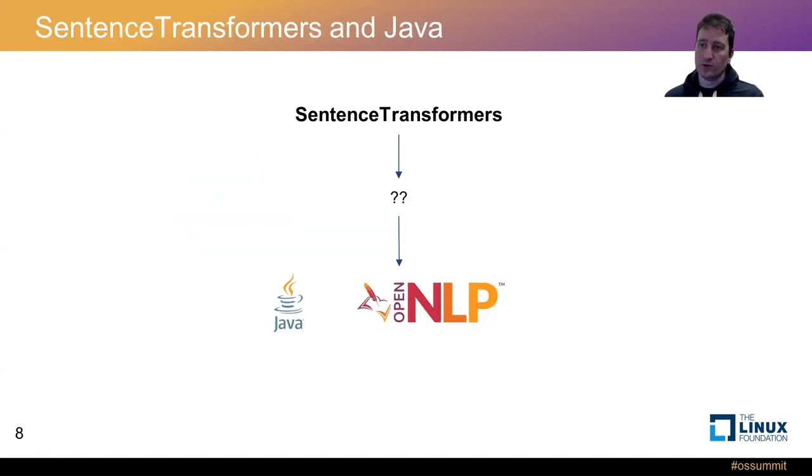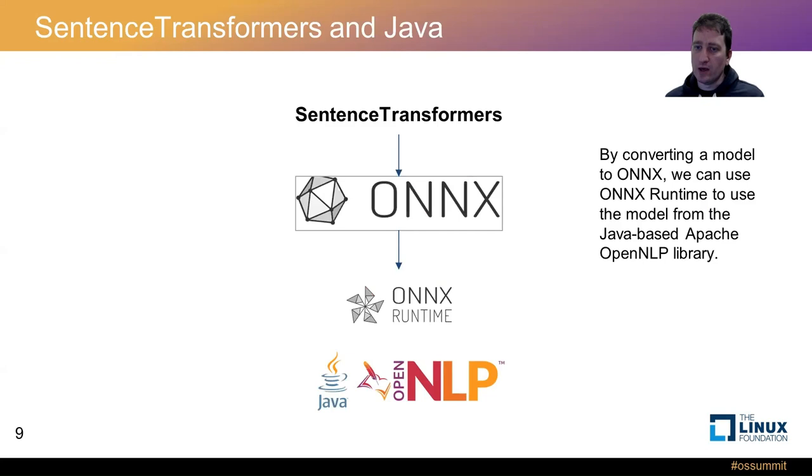So we have Sentence Transformers, which lives in the Python ecosystem. And we have Apache OpenNLP, which is a Java library for NLP. So how do we use the Sentence Transformers in Python with the PyTorch and the TensorFlow models? How do we use that from Java, from OpenNLP? One way to do that is using Onyx and Onyx Runtime. So we can take the pre-trained Sentence Transformers model, and we can export the model to Onyx, and then use Onyx Runtime to be able to call that model from Java.